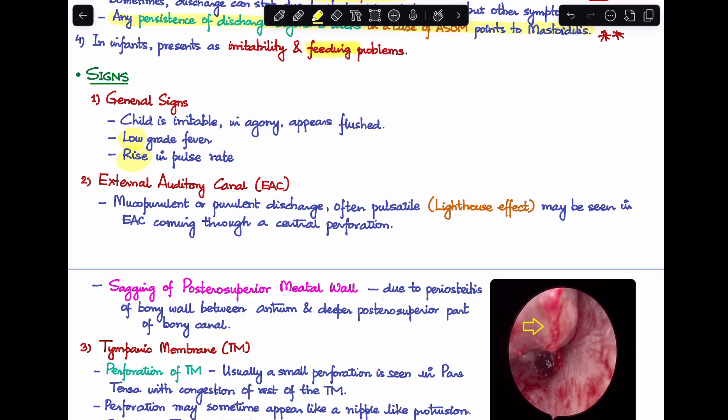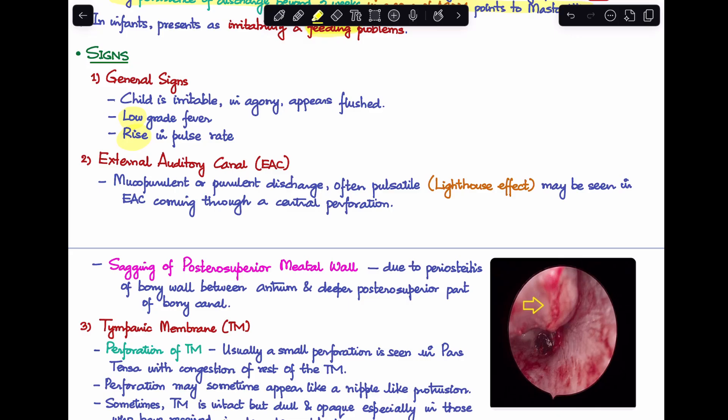Coming to external auditory canal, two things. One, there can be mucopurulent or purulent discharge which can be pulsatile, known as the lighthouse effect. This can be seen coming through the EAC through a central perforation. Second important feature is sagging of posterior superior meatal wall. If you see in the image, this is sagging of posterior superior meatal wall. This happens because of periostitis of the bony wall between the deep posterior superior part of the bony canal and the antrum. This is a very important feature in acute mastoiditis.